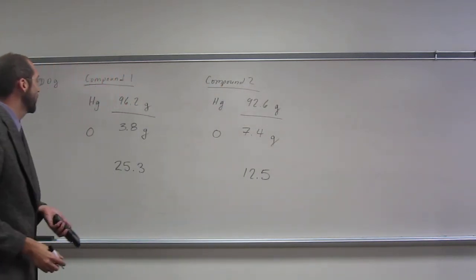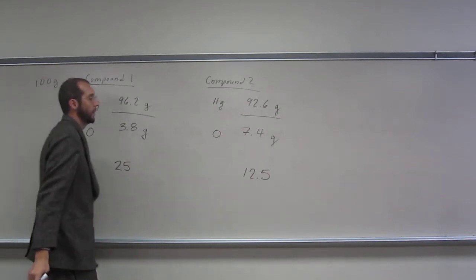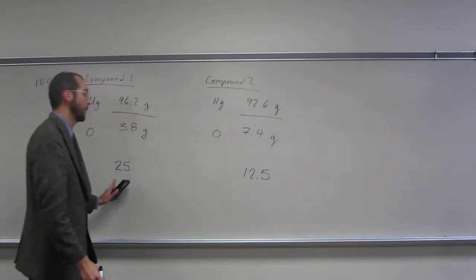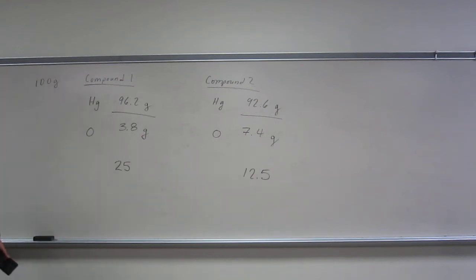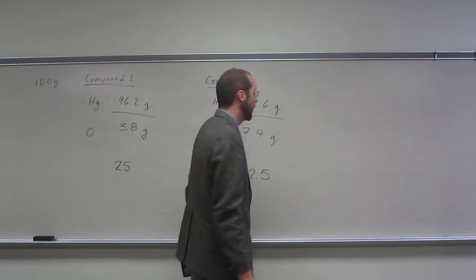Hopefully you can see, let's just take this 3 off of there. So 12.5 times 2 is 25, right? So what you can do is, it's a 2 to 1 ratio.